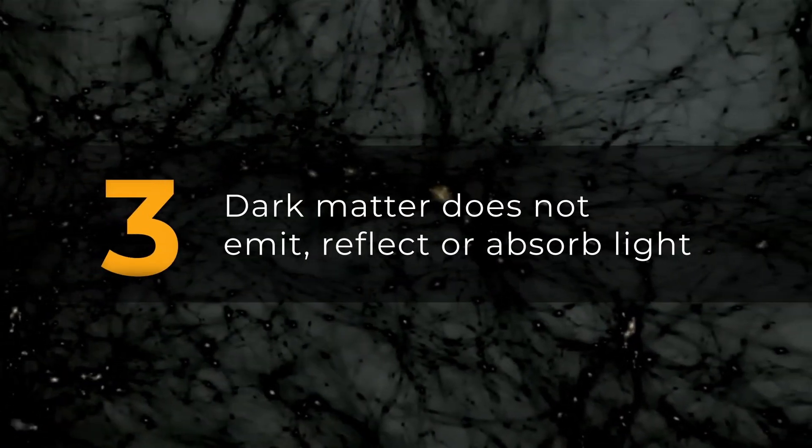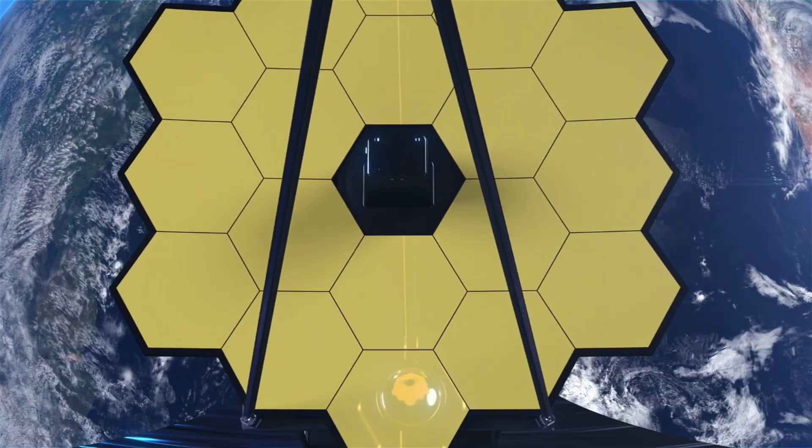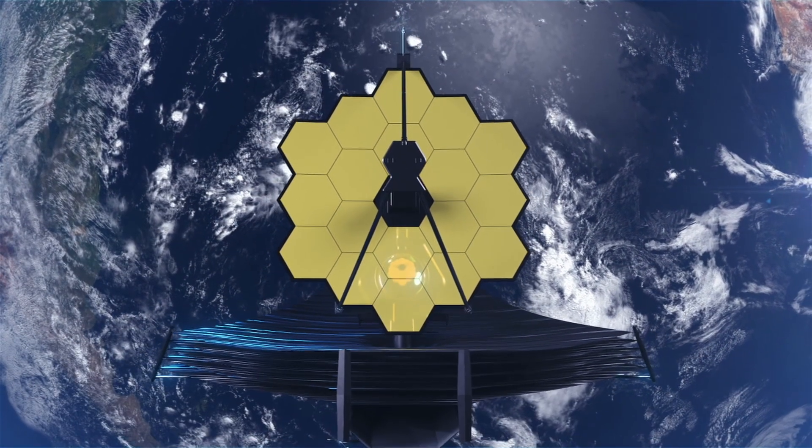Dark matter, on the other hand, does not interact with photons, and therefore doesn't emit, reflect, or absorb any light, making it invisible to even the James Webb Space Telescope.